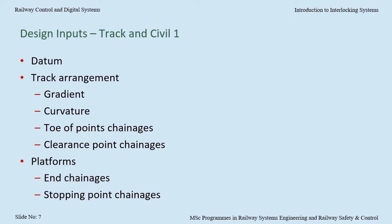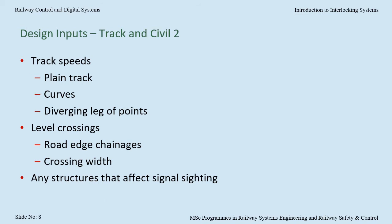The design that signalling needs from track and civil includes agreeing on the datum, the track arrangement — which includes gradient, curvature, toe of points changes and clearance point changes — the location of platforms including end point changes and stopping point changes, and track speeds, which includes speed on plain track, speed on curves and the special case of curves being the diverging leg of points.